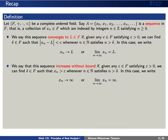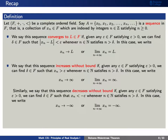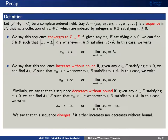We'll say that this sequence increases without bound if, given any positive epsilon, we can find a delta such that x sub n is greater than epsilon whenever n is greater than delta. We'll say that this sequence decreases without bound if, given any positive epsilon, we can find a delta such that x sub n is less than negative epsilon whenever n is greater than delta. If the sequence either increases without bound or decreases without bound, we'll say that the sequence diverges.